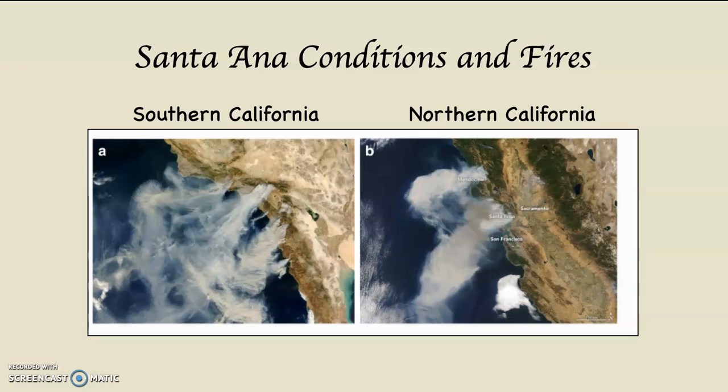These satellite pictures of Southern and Northern California during a recent Santa Ana event show large fires. You can see from the way the smoke is blowing offshore that we are clearly under the influence of easterly or northeasterly winds. If a fire starts when the air is dry and warm, it exacerbates the problems. Whereas when you get an onshore flow and the air is wet, that tends to tamp down the fires.